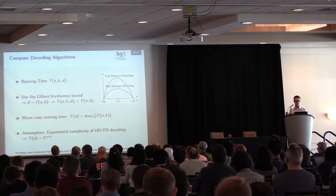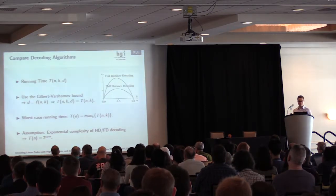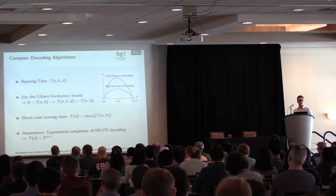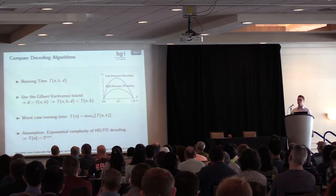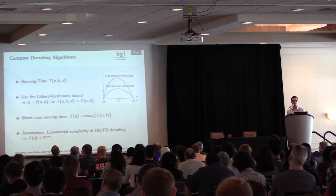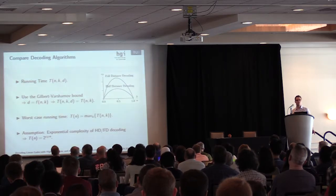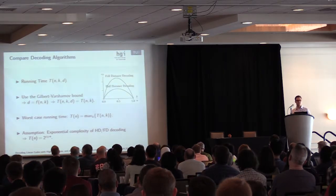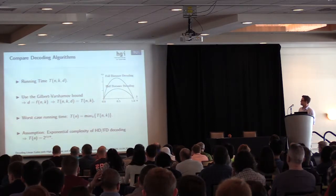To compare decoding algorithms, we look at the running time. The running time is a function of n, k, and omega. To simplify this, we first use the Gilbert-Varshamov bound, which essentially tells us that if we have a random linear code, then D is a function of n and k, so we can omit the D in the running time. The next step is that we only look at the maximum running time over all k.